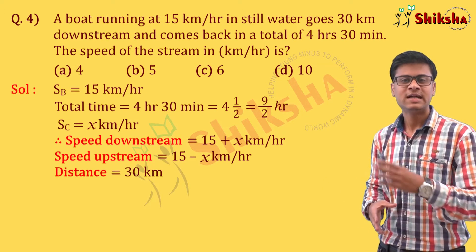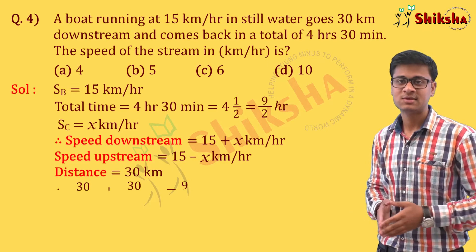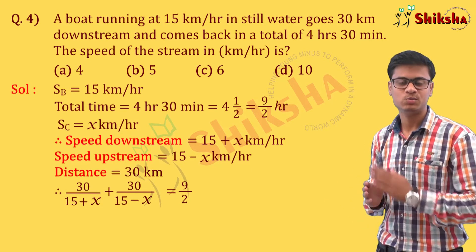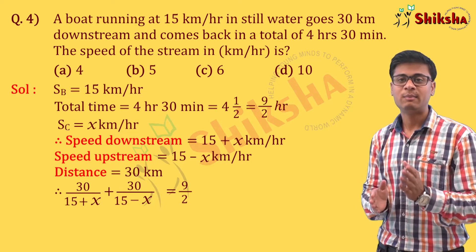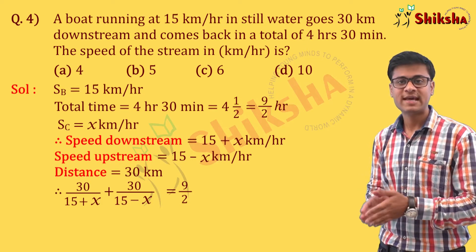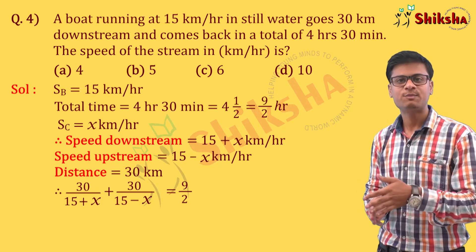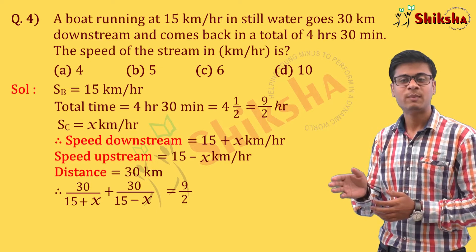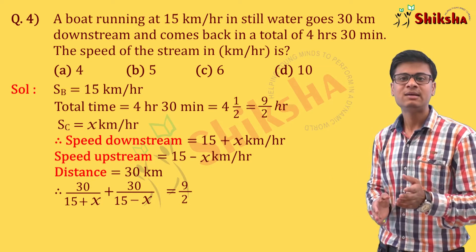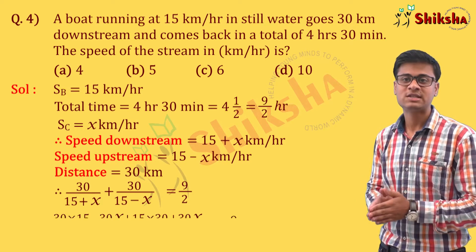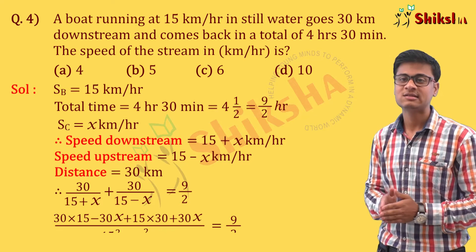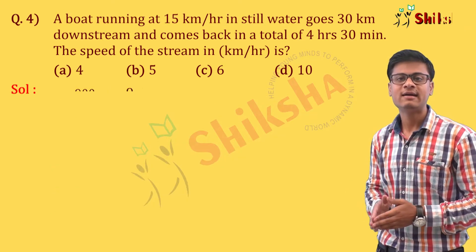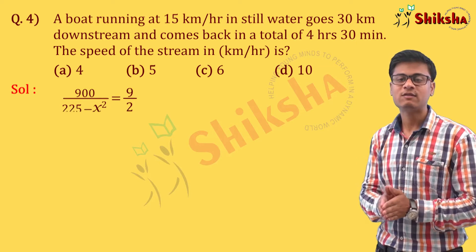Our equation becomes: 30/(15 + x) + 30/(15 − x) = 9/2. Taking the LCM of the denominator, we have (15 + x)(15 − x), which is a² − b², that is 15² − x². In the numerator, multiplication gives 30(15 − x) + 30(15 + x). The −30x and +30x cancel, so we get 900/(225 − x²) = 9/2.